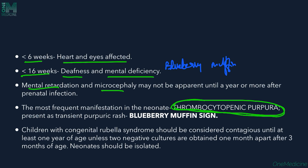Children with congenital rubella syndrome are contagious until at least one year of age. To take the infant out of isolation, two negative cultures must be obtained one month apart after three months of age. Only then can the infant be considered free of infection.